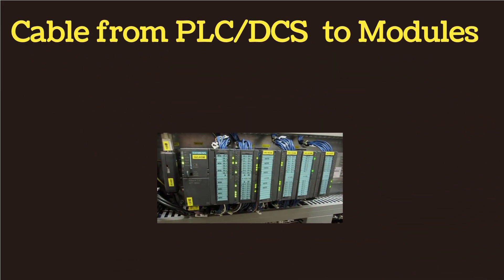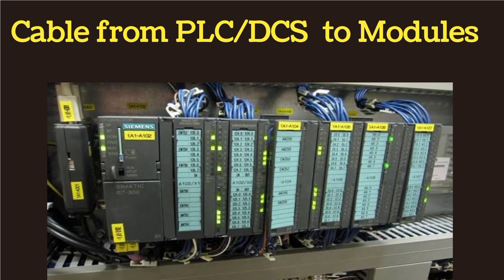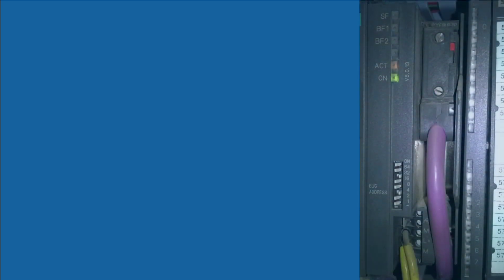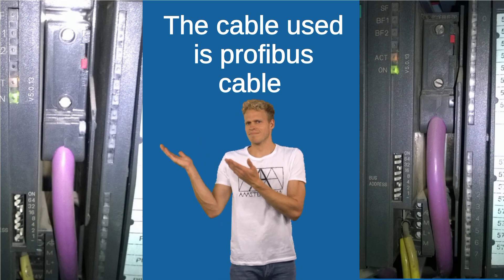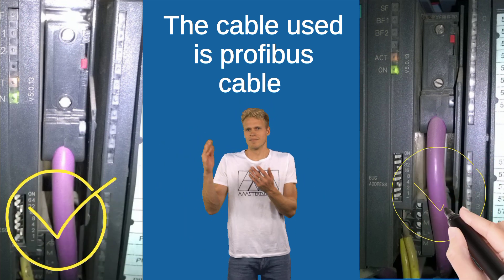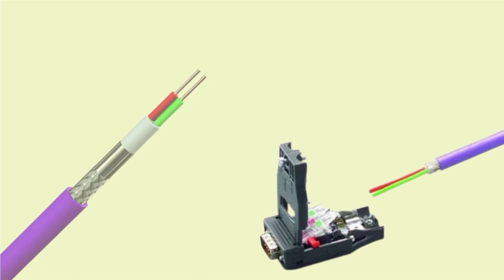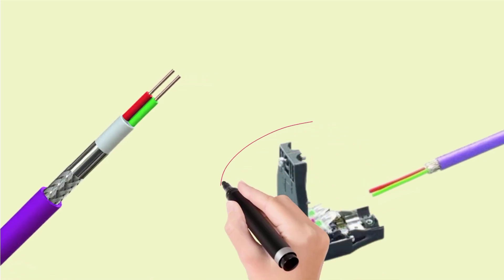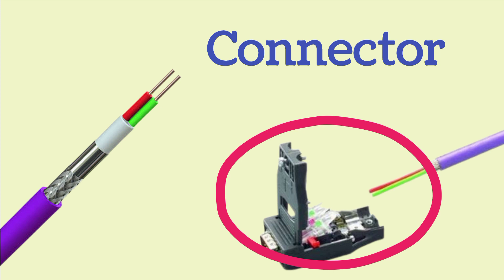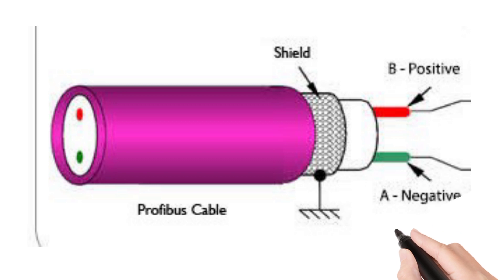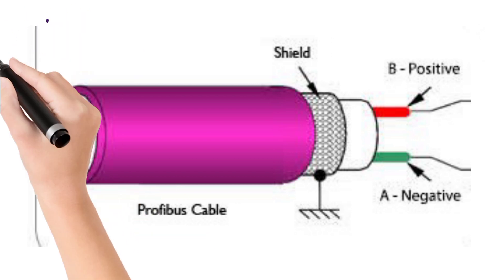Now we will see the cable used from PLC/DCS to its modules. This cable is purple in color and its name is profibus cable. Profibus cable is shown connected in the left and right pictures by the circle. A connector is required to connect the profibus cable. In profibus cable, the red wire is the positive wire and the green wire is the negative wire — always remember this.